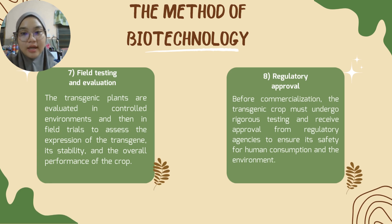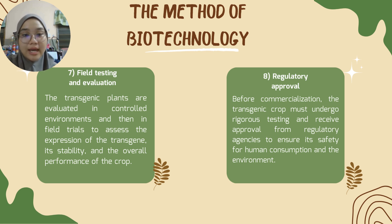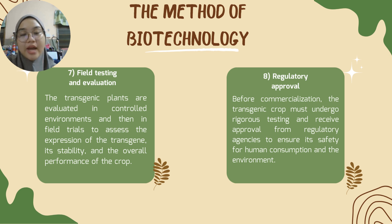Field testing and evaluation. The transgenic plants are evaluated in controlled environments and then in the field to assess the expression of the transgene, its stability, and the overall performance of the crop. Lastly, regulatory approval. Before commercialization, the transgenic crop must undergo rigorous testing and receive approval from regulatory agencies to ensure its safety for human consumption and the environment.